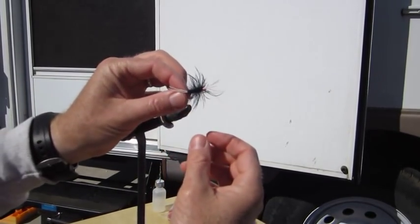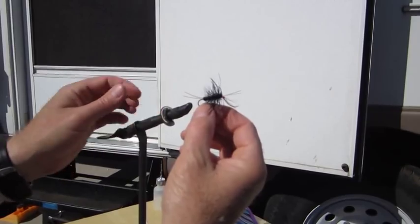Put a little head cement at the top, clean it up a little bit. There's a Bitch Creek Nymph size 6.